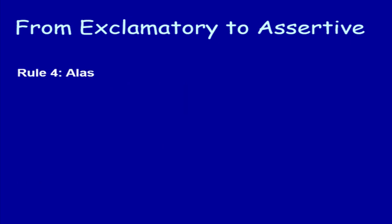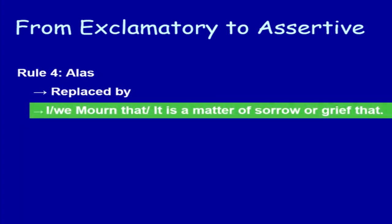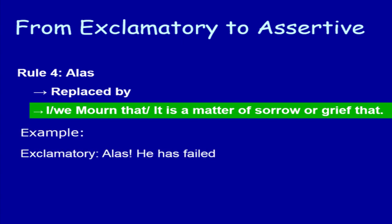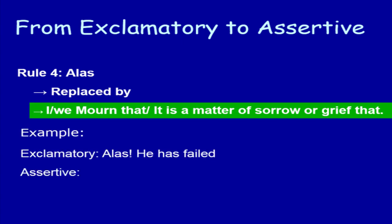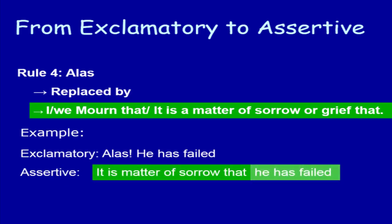Rule number 4. 'Alas' is replaced by 'I/we mourned that' or 'It is a matter of sorrow/grief that.' Example: 'Alas, he has failed.' In assertive sentence, in place of 'Alas,' write 'It is a matter of sorrow that,' then write the rest part of the sentence without any change.